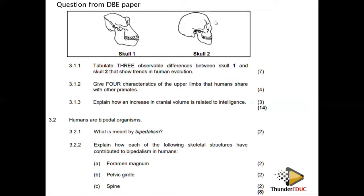Number two observable difference: sloping face in one skull versus a flat face in the other. Number three: the canines — here they are well developed, while in the other skull the canines are less developed. Number four: the jaws are protruding outward in one skull, while in the other skull the jaws are not protruding. A protruding jaw indicates a more primitive, ancestral form.